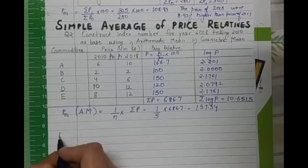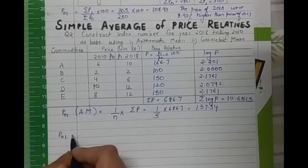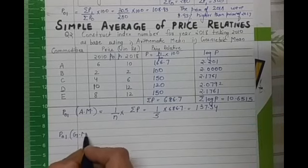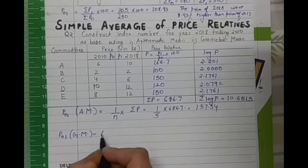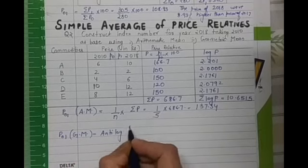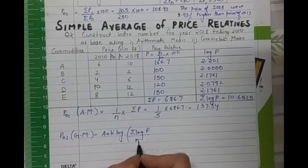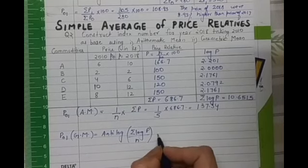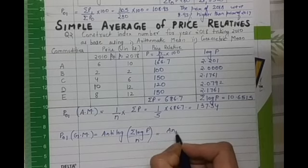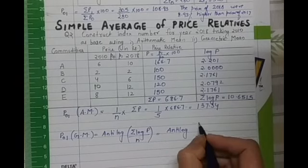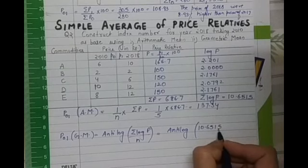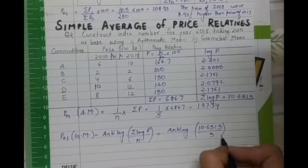Now the index number as per geometric mean will be anti log of sigma log P upon n. So in our case, this is equal to anti log of 10.6515 divided by 5, bracket close.